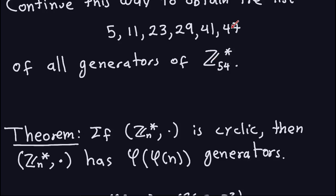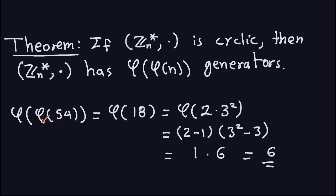For example, Z54* has six generators: 5, 11, 23, 29, 41, and 47. I can compute how many there are by doing φ(φ(54)) = φ(18). We computed φ(54) = 18 in the last video. Now I compute φ(18): factor 18 as 2 × 3², then apply φ to each factor. φ(2) = 2 − 1 = 1, and φ(3²) = 3² − 3¹. This gives 1 × 6 = 6, which is exactly the number of generators of Z54*.